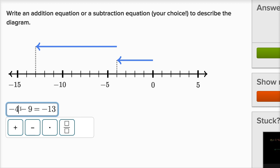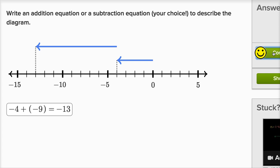Now another way I could have done it, I could have said negative four plus negative nine is equal to negative 13 as well. Either of those would have been legitimate. Now I've written it as an addition equation. Let's keep going.